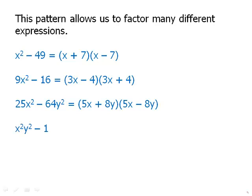For x squared y squared minus 1: x squared y squared means that a equals xy, because xy times xy equals x squared y squared. And b equals 1. So this factors into xy minus 1 times xy plus 1.